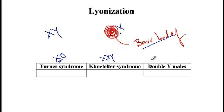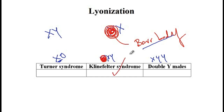Double Y males are XYY, so there is only one X chromosome. Any condition that has more than one X chromosome will form a Barr body. Klinefelter, since it has an extra X chromosome, will form one Barr body.